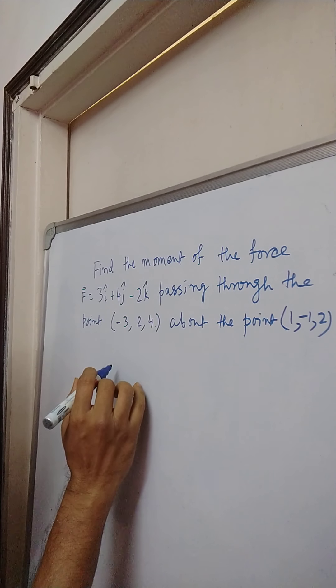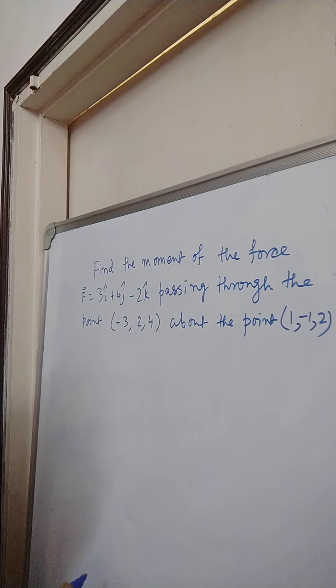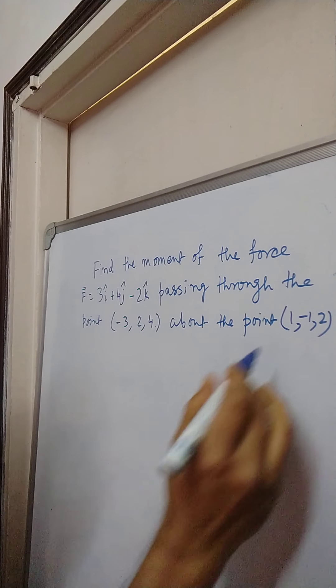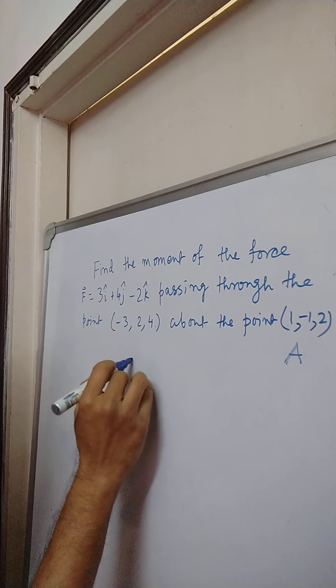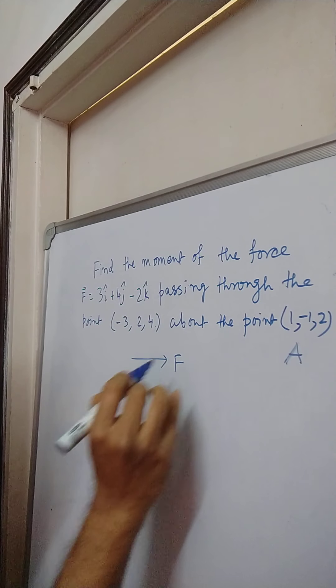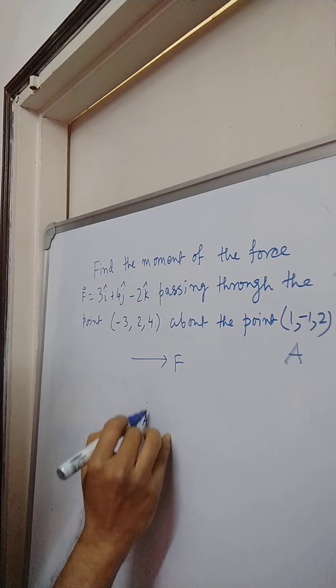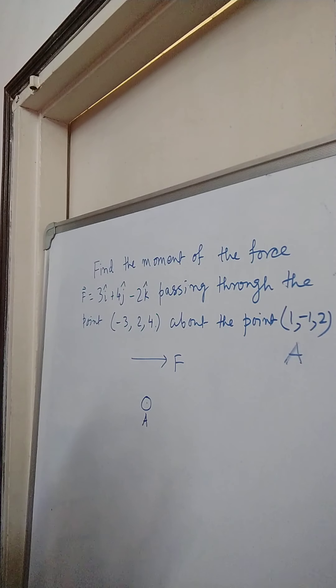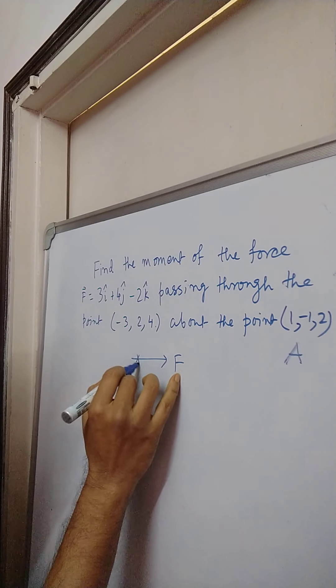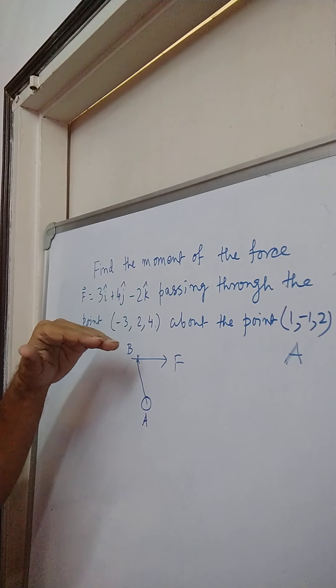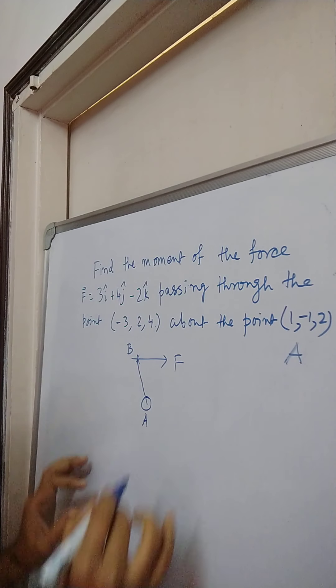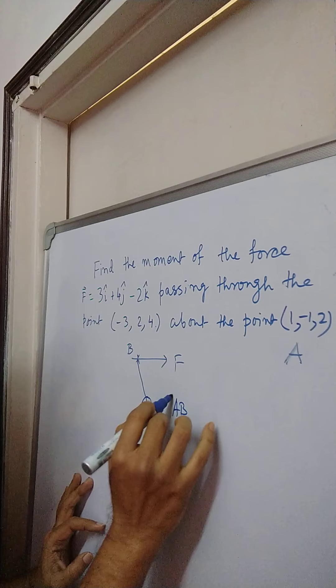What is the moment of a force F about a point, say A? The theory says that if F is the force and A is the point about which the moment is to be found, then we have to take another point B on the line of action of F and AB is termed as R.